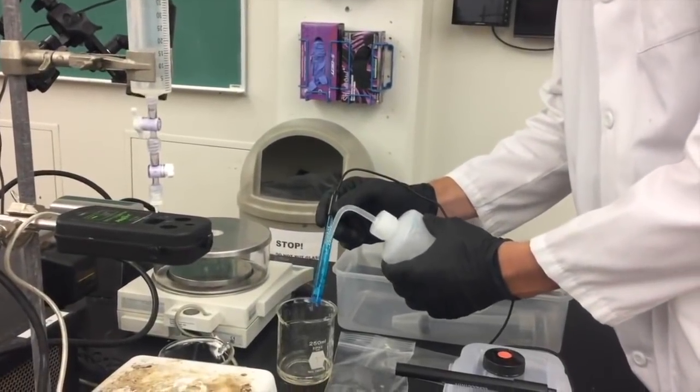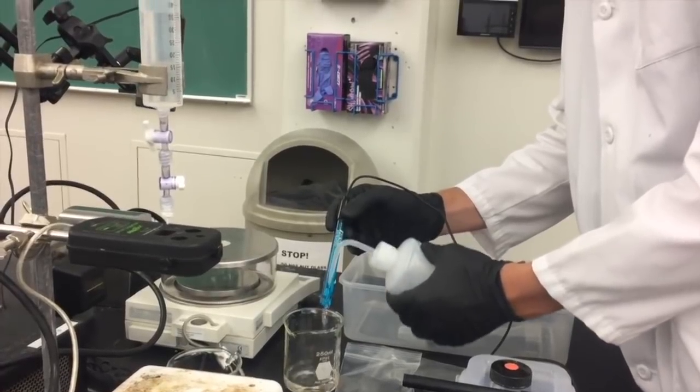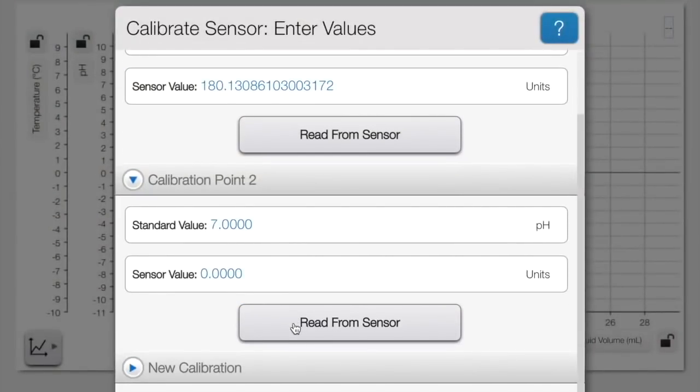Rinse the sensor again with distilled water and then repeat the process with the pH 7 buffer solution. Now your pH meter should be calibrated.